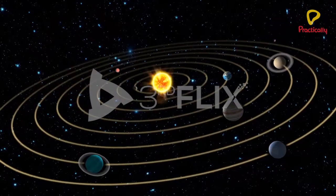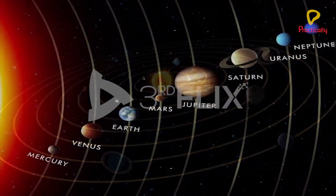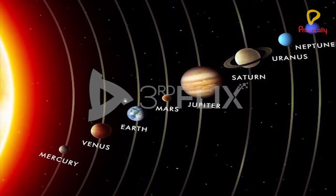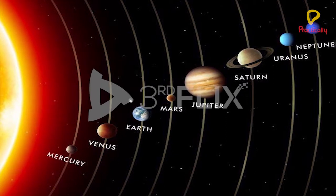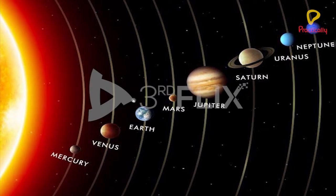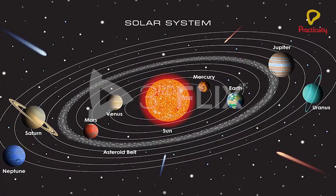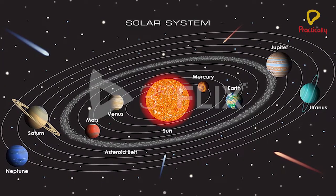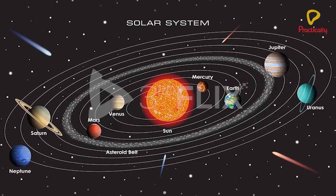The planets in our solar system are Mercury, Venus, Earth, Mars, Jupiter, Saturn, Uranus and Neptune. In this topic, we will learn about the sun and the planets in the solar system.